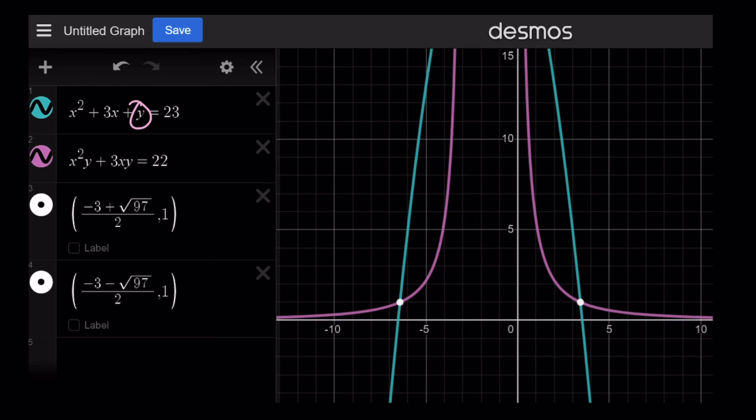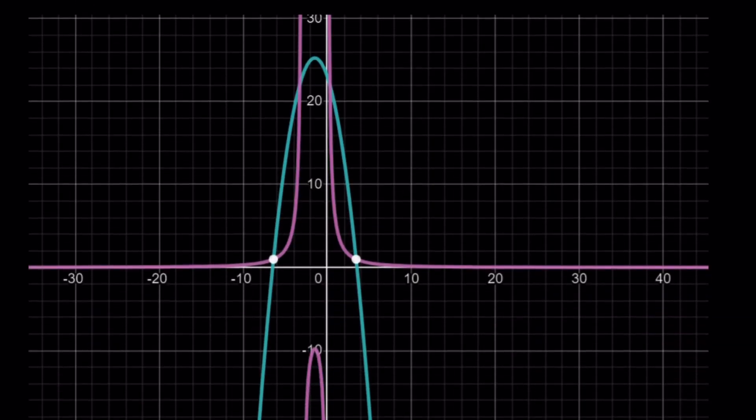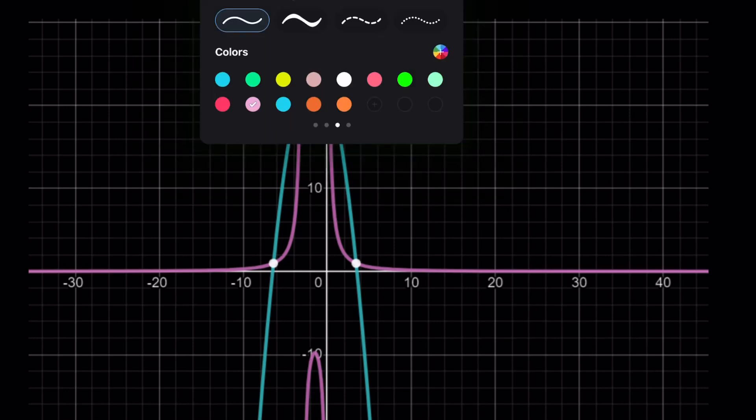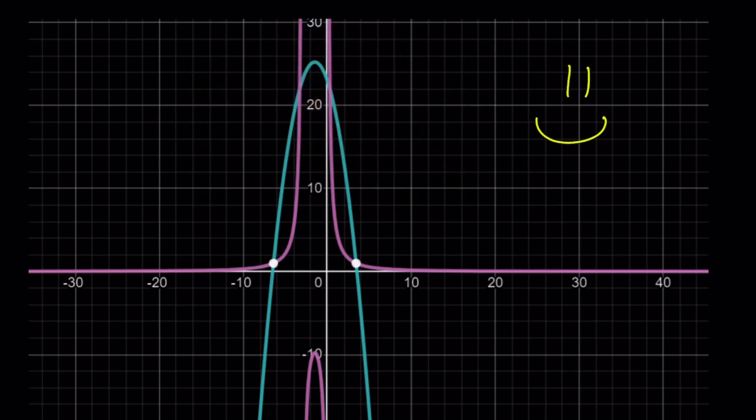If you isolate y, you get a parabola. If you isolate y here you get a rational equation. This graph doesn't necessarily reflect that. But if you look at the zoomed in version, you notice the parabola and rational function. And this brings us to the end of this video. Thank you for watching. I hope you enjoyed it. Please let me know. Don't forget to comment, like, and subscribe. I'll see you next time with another video. Until then, be safe. Take care. And bye-bye.